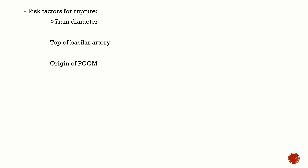There are three important risk factors for rupture: first, if the diameter is more than 7 millimeters; second, top of basilar artery aneurysms — also a common site for giant aneurysms; and third, origin of the posterior communicating artery. These are the three important risk factors for a berry aneurysm to rupture.